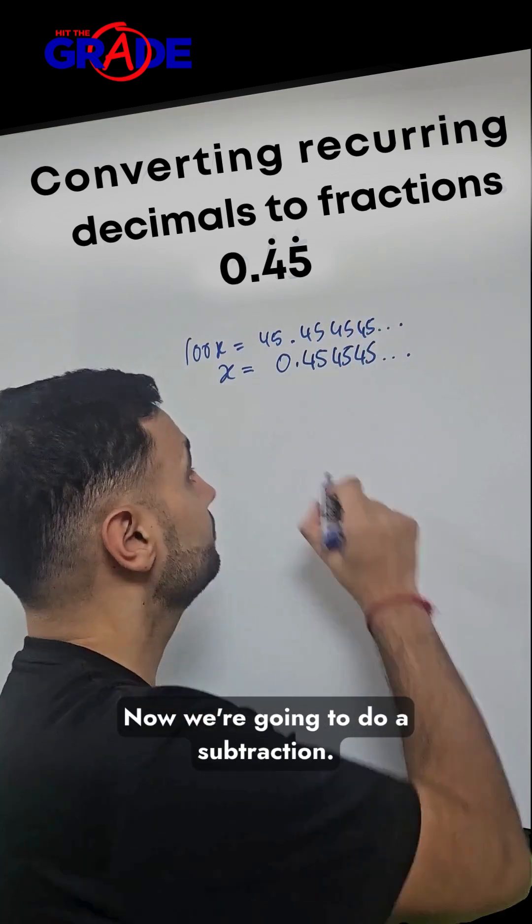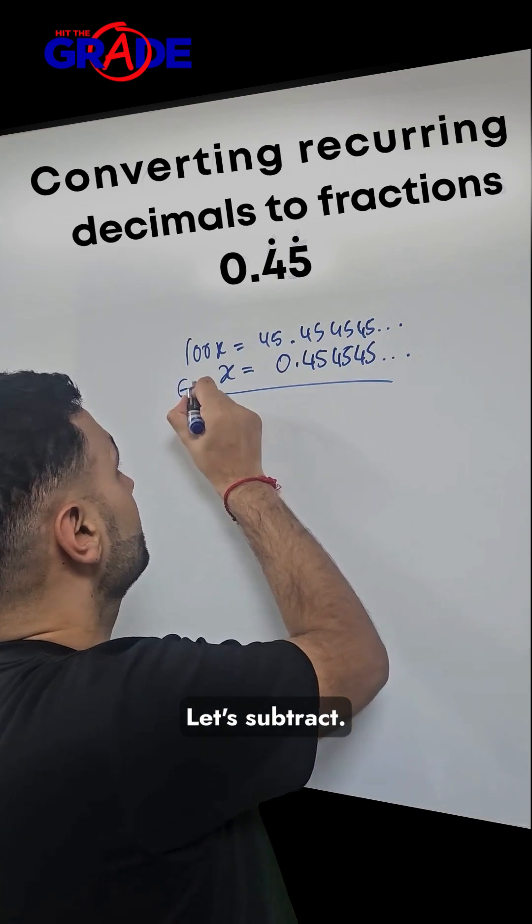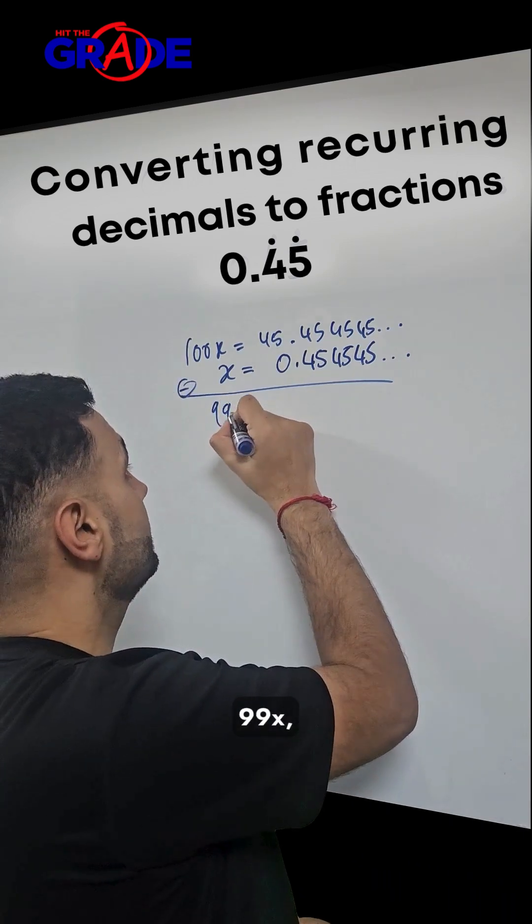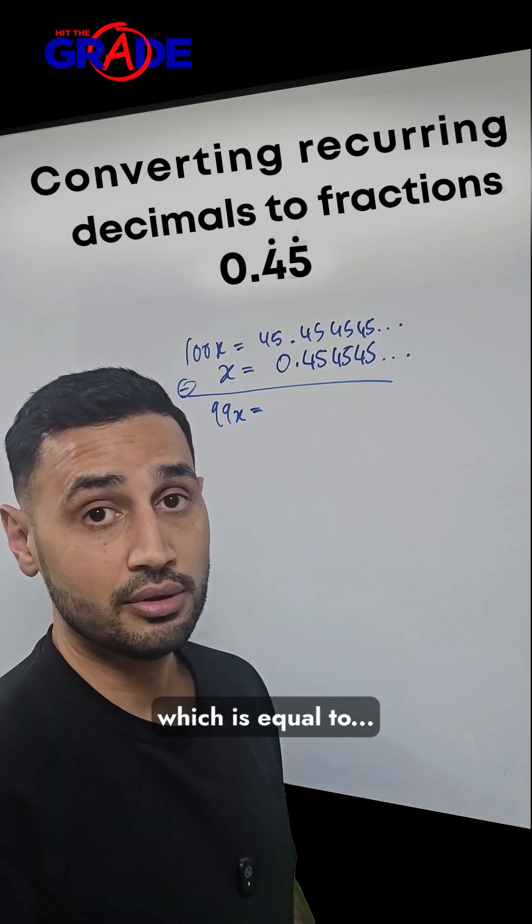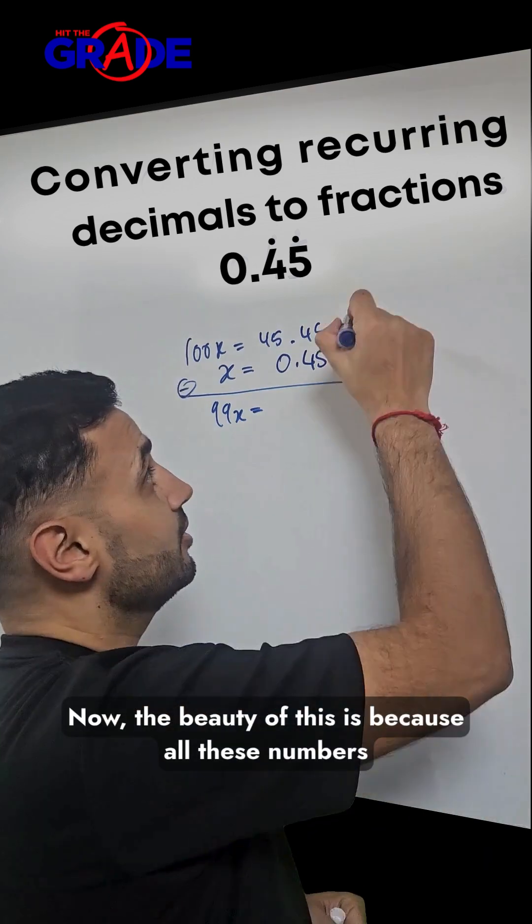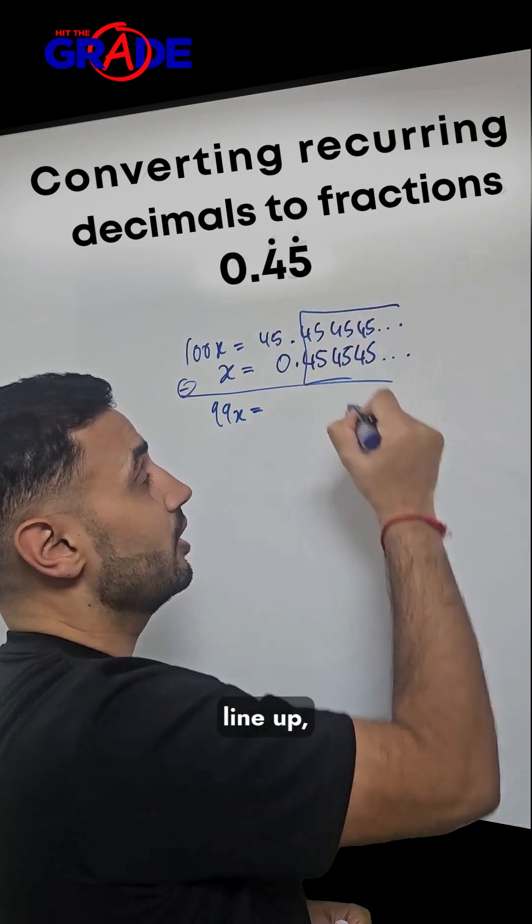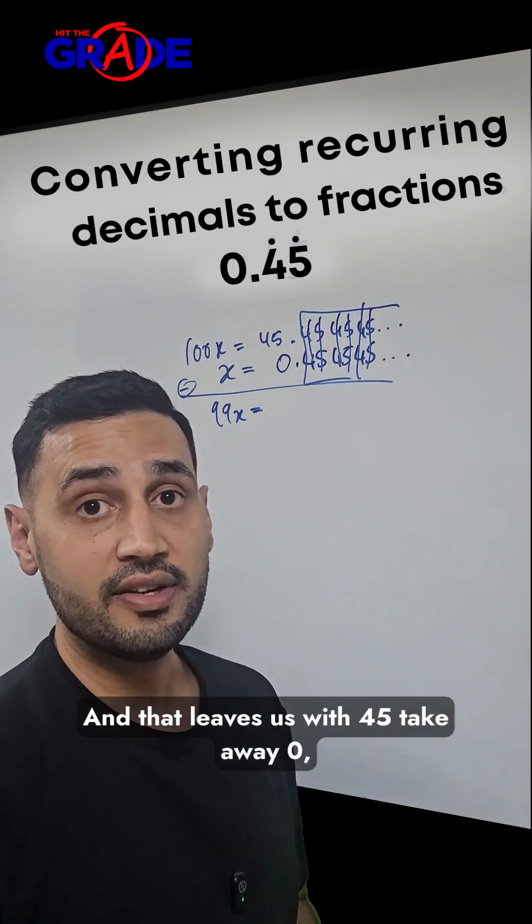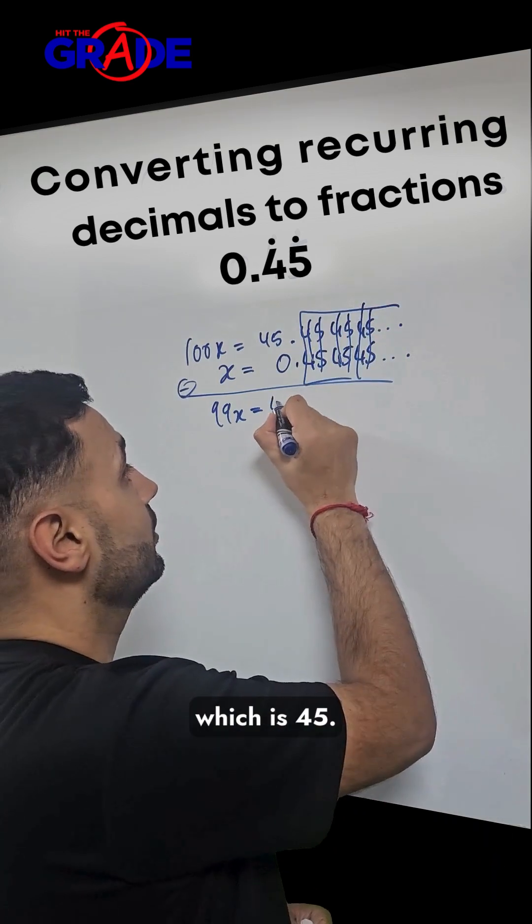Now we're going to do a subtraction. 100x minus x is 99x, which equals... The beauty of this is because all these numbers line up, we can cancel each of them out. That leaves us with 45 minus 0, which is 45.